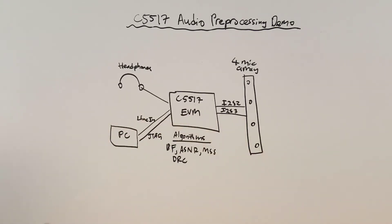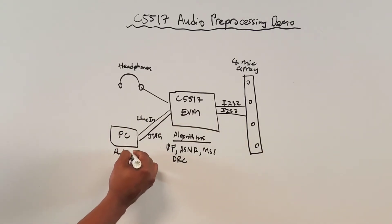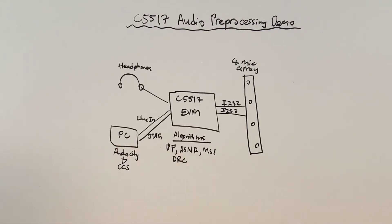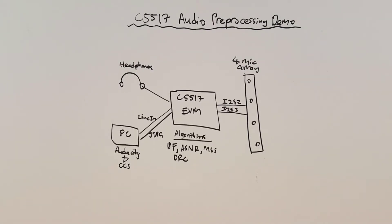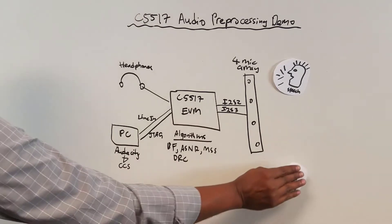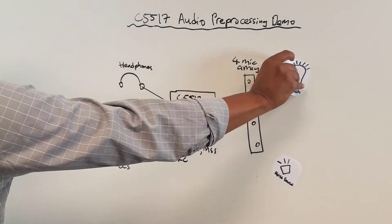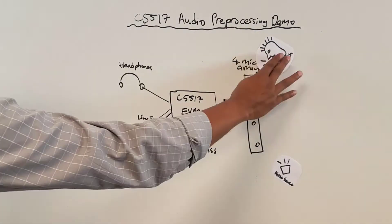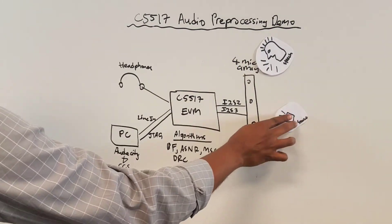Alternatively, the audio can also be piped to a PC so that the audio can be recorded and analyzed in software such as Audacity or Adobe Audition. Code Composer Studio running on the PC will be used to control the C5517 in order to load the binary and do other debugging. The demo can be tested by standing in front of the microphone array and speaking to it while simultaneously having some sort of a noise source coming from a different angle. The test environment can be manipulated as needed to see the performance of the audio pre-processing.